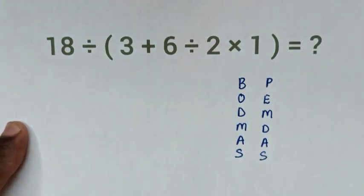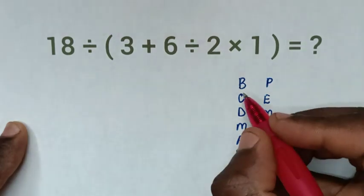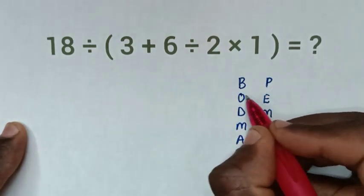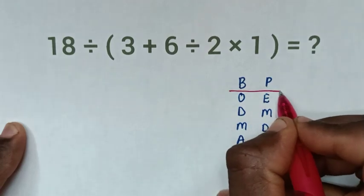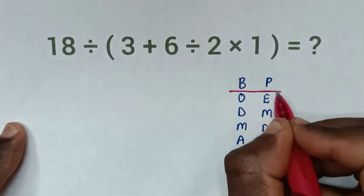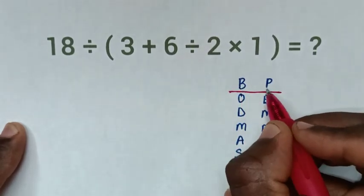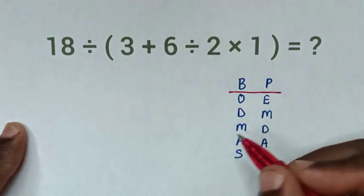Then, from this rule, this BODMAS, from here, B or P, we'll start to deal with B or P. B is bracket, P is parenthesis.